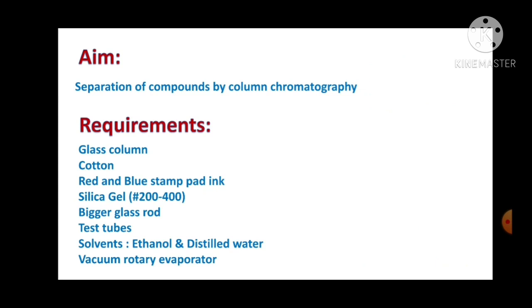These are the requirements to perform the experiment. We require a glass column, cotton to hold the stationary phase, and red and blue stamp pad ink as a sample — we have mixed them together. We require silica gel, the widely used stationary material; the commercially available silica gel specially made for column chromatography with mesh size 200 to 400. We also need a longer glass rod to pack the stationary phase, test tubes to collect fractions, a solvent system of ethanol and distilled water, and optionally a vacuum rotary evaporator to reuse solvents.